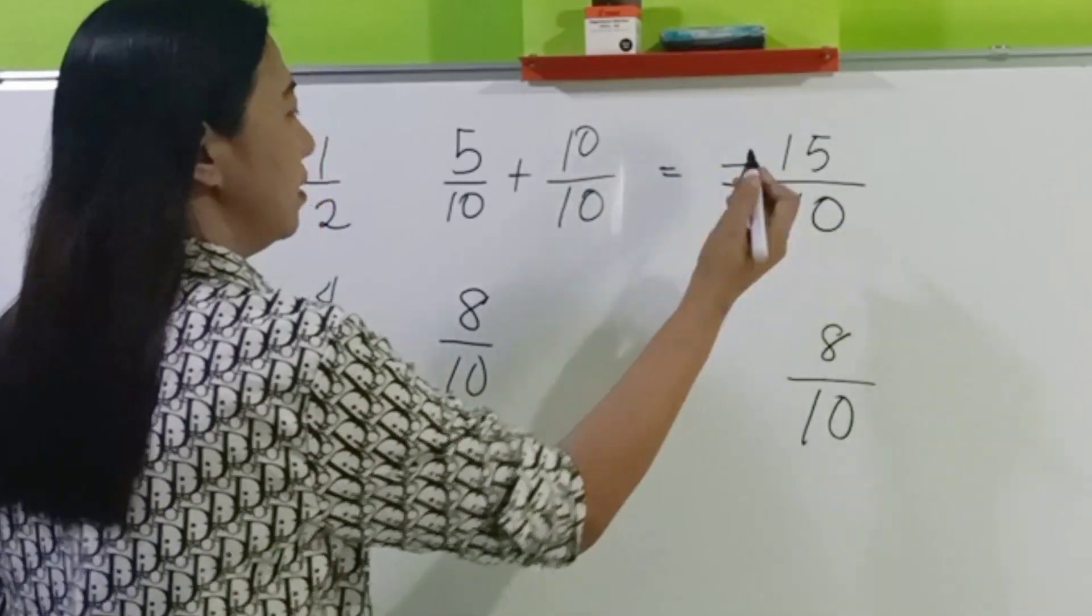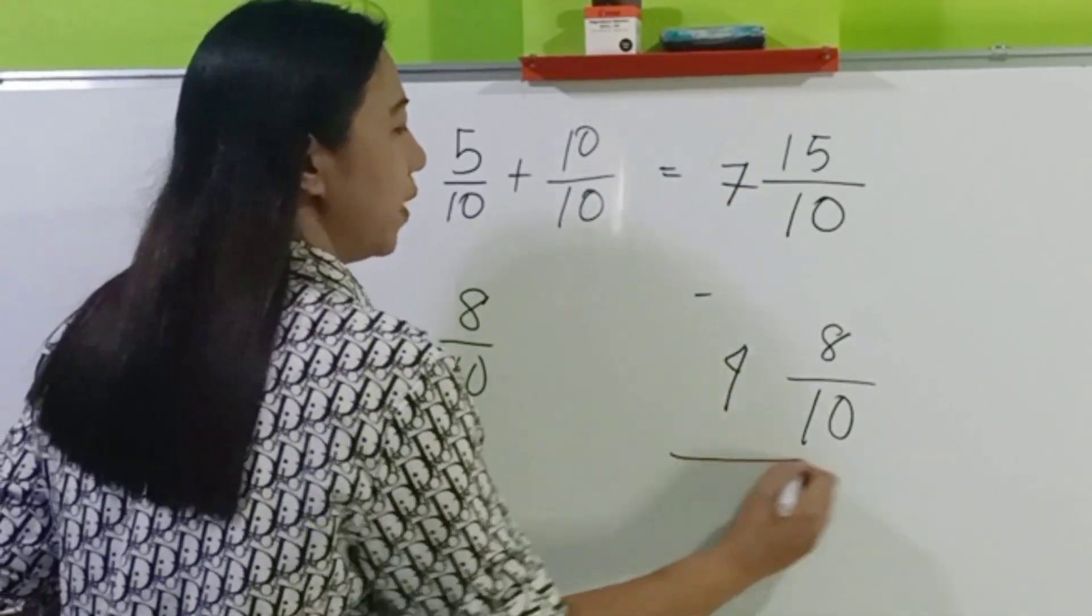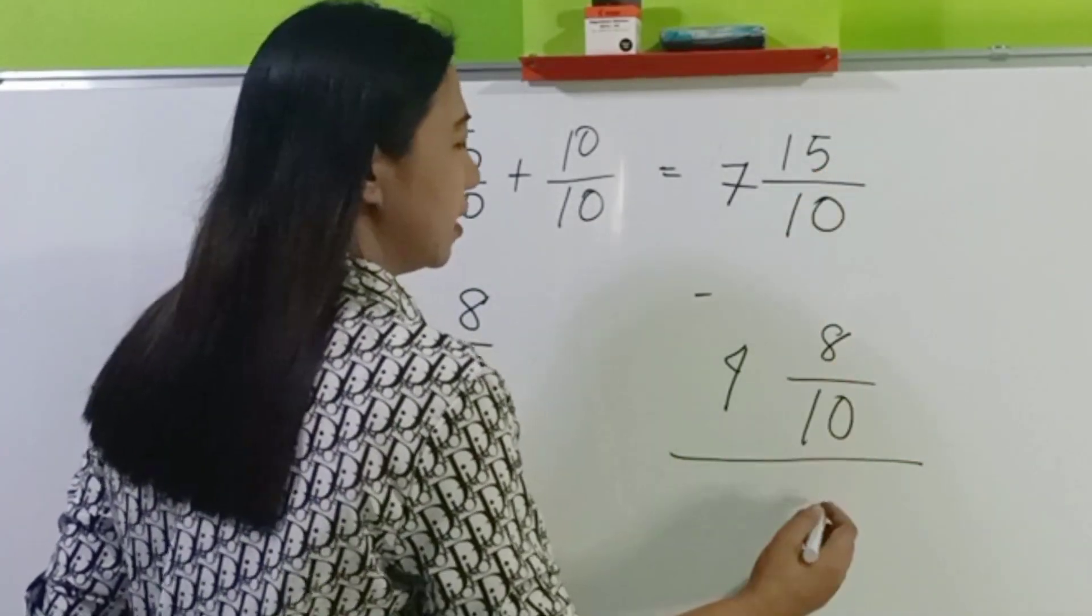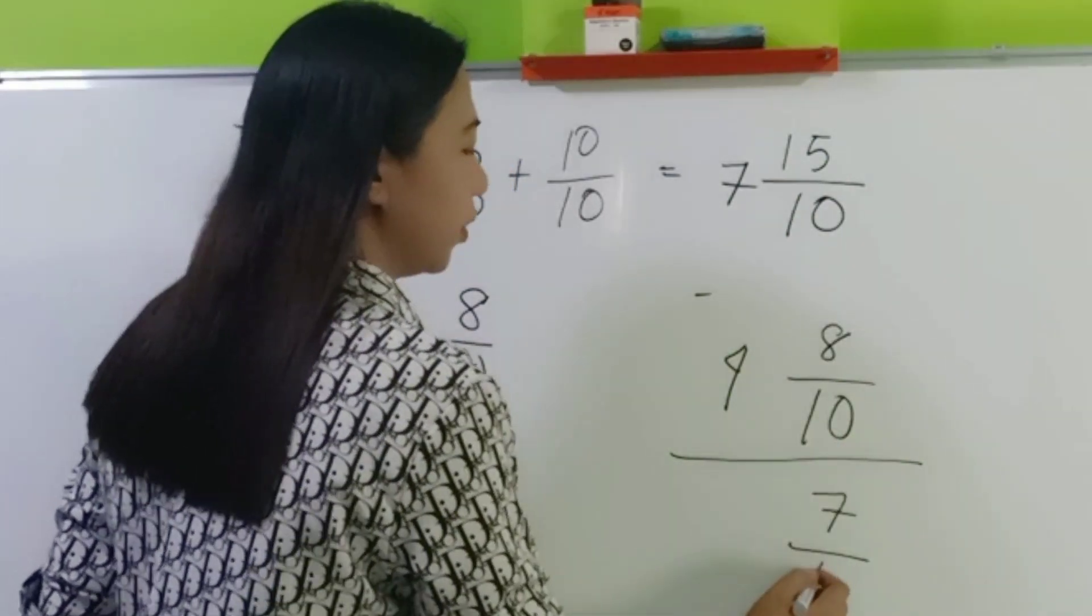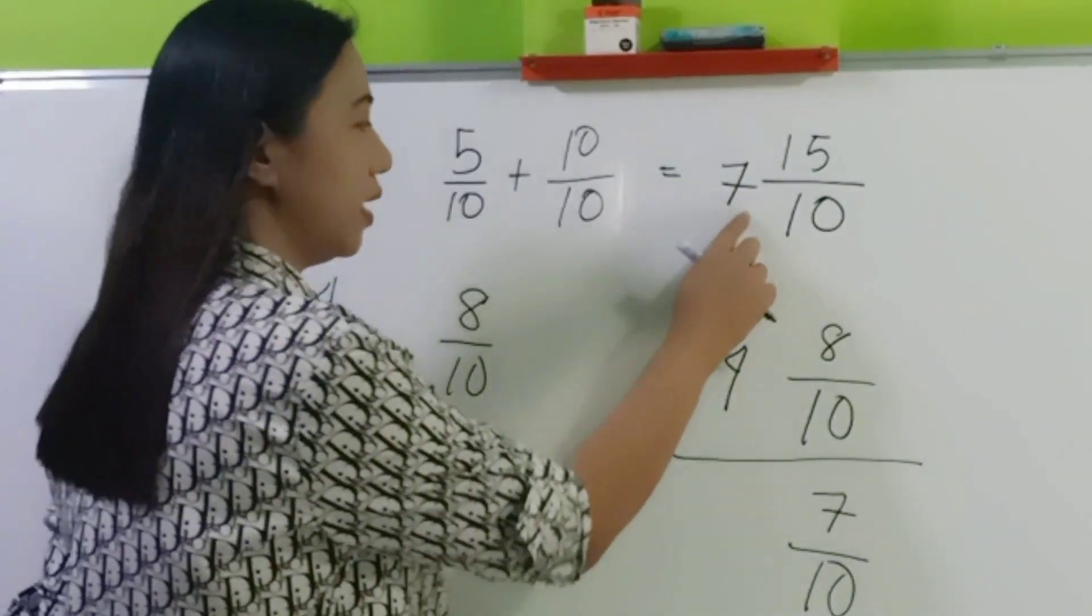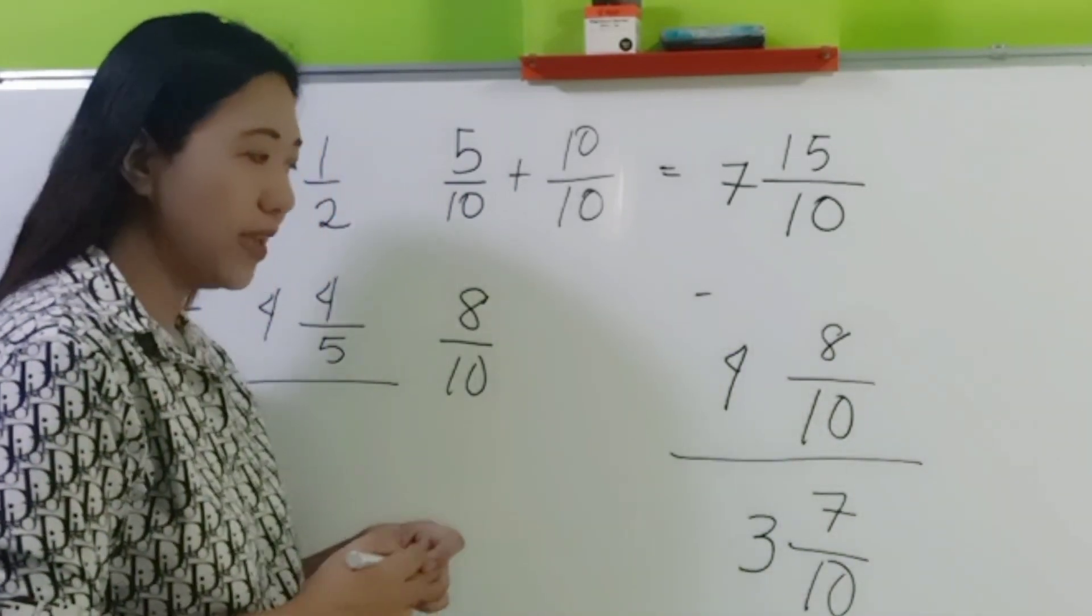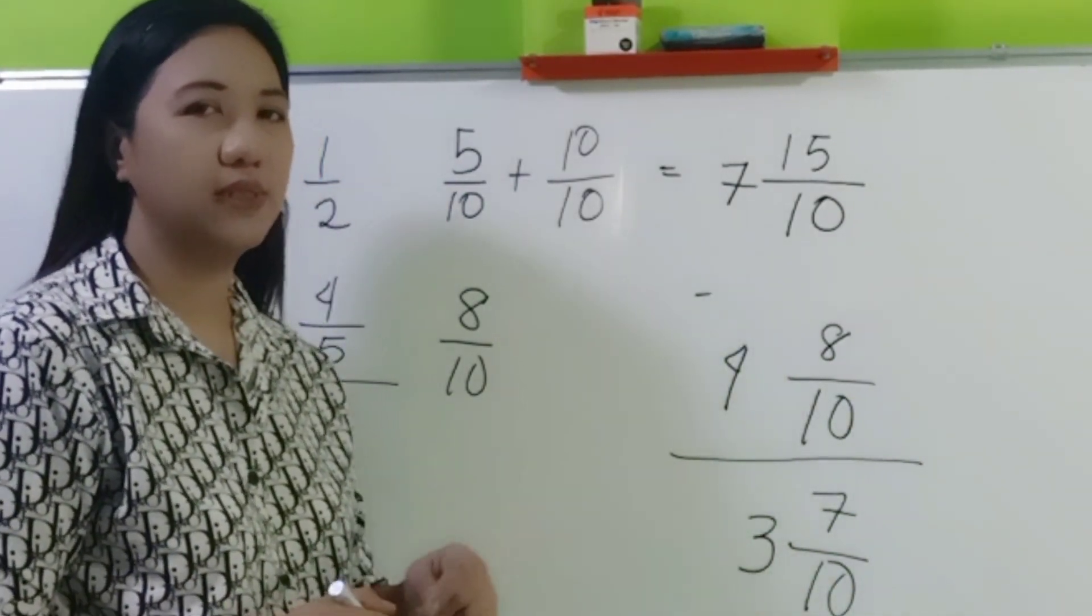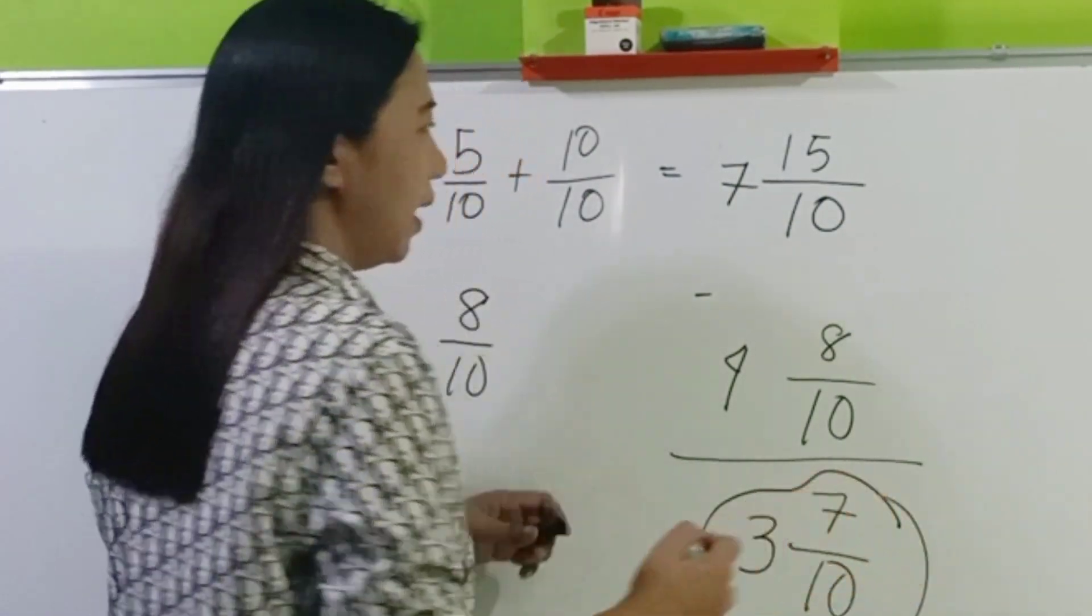Let's also copy the whole numbers. 7 and then 4. We are now ready to subtract. So 15 minus 8 is 7. And then copy the common denominator. Subtract the whole numbers. 7 minus 4, 3. Simplify if needed. But can you still simplify 3 and 7 tenths? No more. So this is now the final answer.